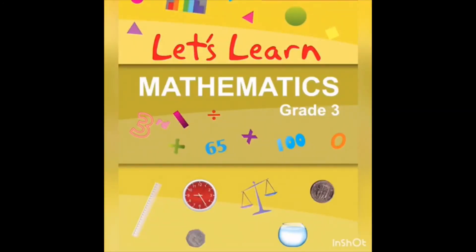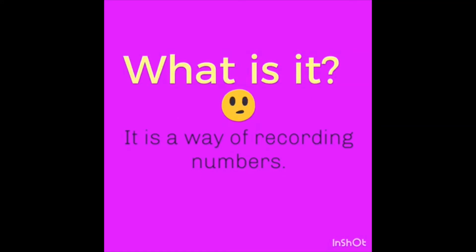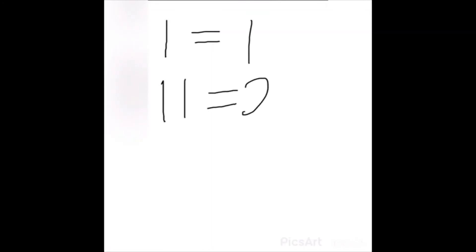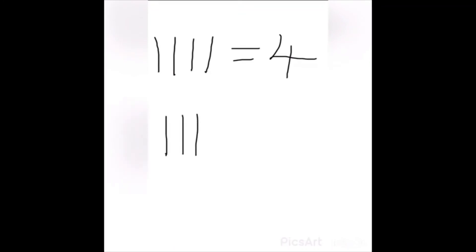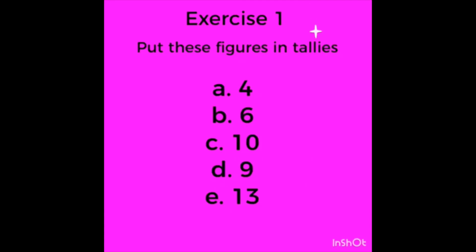Hello Grade 3 students, welcome to mathematics. Topic 1: Telling. Telling is a way of recording numbers. One tally — count with me: one, two — two tallies; one, two, three — three tallies; one, two, three, four — four tallies; one, two, three, four and a crossing tally — five tallies, or a bunch. Five plus two equals seven. Now do the following exercise on your own.